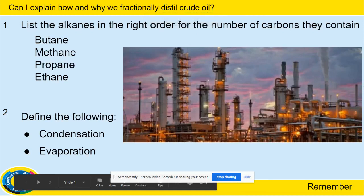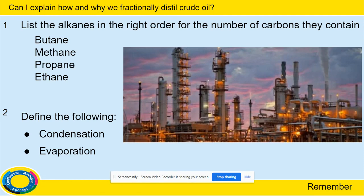This lesson is called: Can I explain how and why we fractionally distill crude oil? In the last lesson we looked at what crude oil was, the fact that we have to get it out of the ground, and the fact that it's a finite resource. But when we get it out of the ground, it's just a mixture of hydrocarbons. To be anything useful, we need to separate it into fractions — we'll learn more about what fractions are in this lesson.